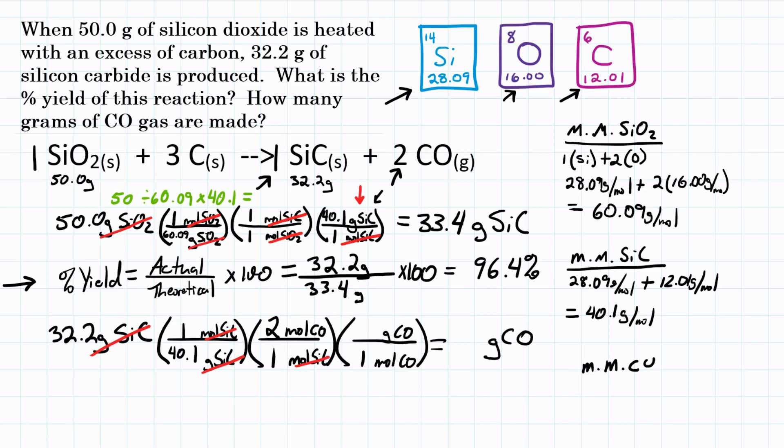Molar mass of CO is just going to be one carbon and one oxygen. So 12.01 grams per mole plus 16.00 grams per mole. And that equals 28.01 grams per mole. So that goes in the last step, 28.01 grams of carbon monoxide is one mole. Moles of CO cancel, and we're left with grams of CO. So let's do the math, 32.2 divided by 40.1 times 2 times 28.01 equals right around 45.0 grams.